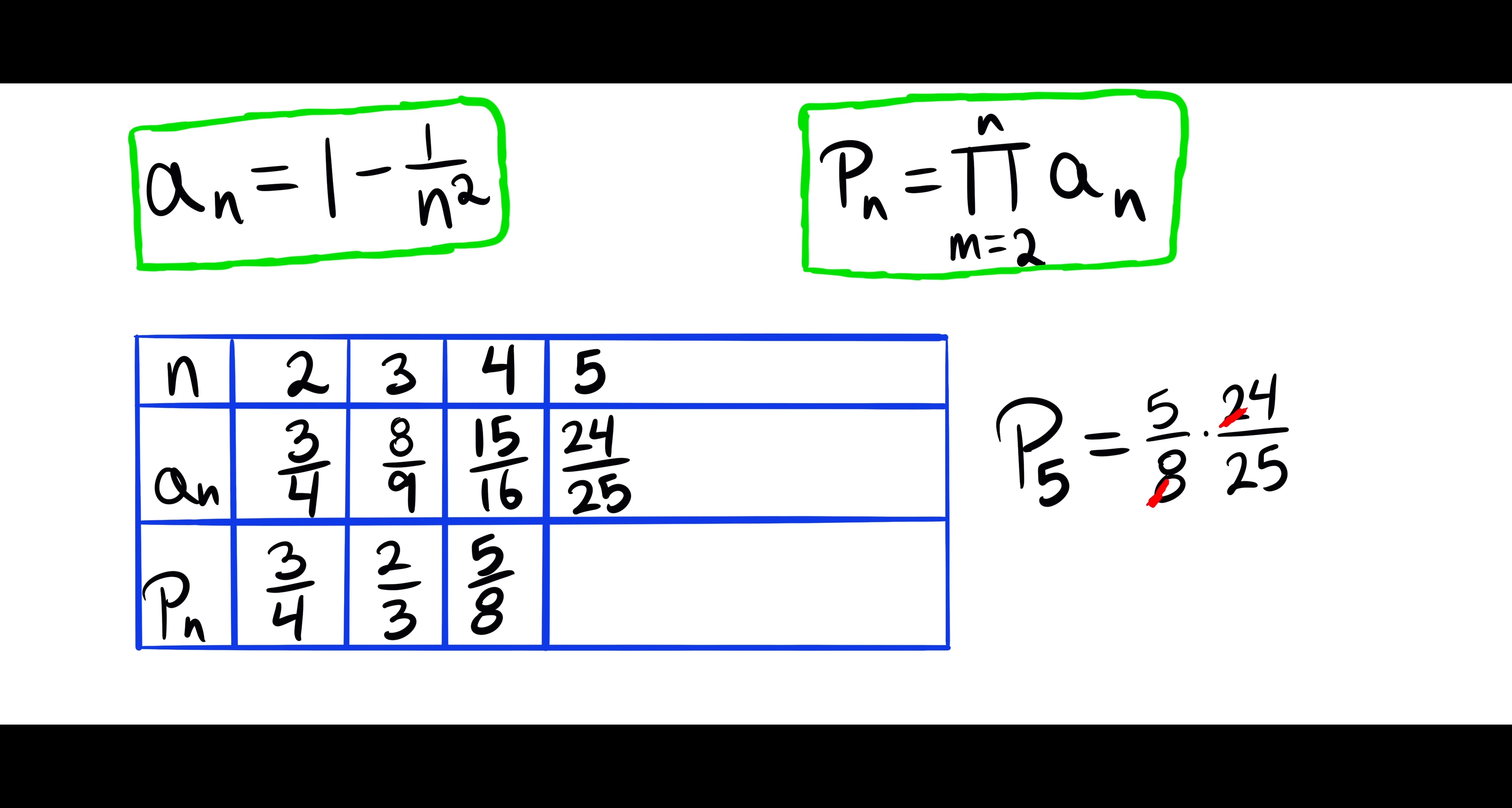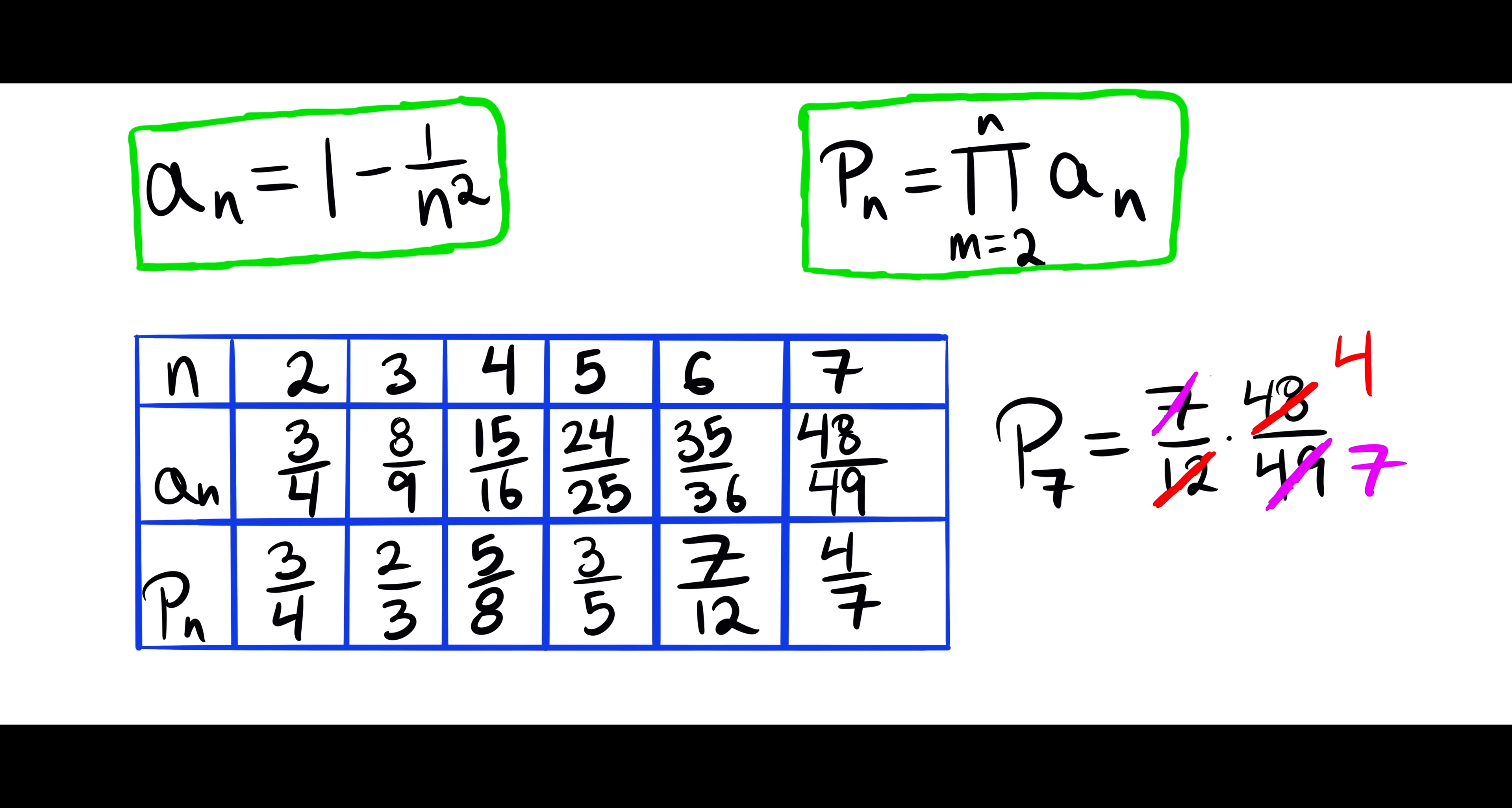When n is 5, we have 24 over 25 and 3 over 5. When n is 6, we have 35 over 36 and 7 over 12. And then finally, when n is 7, we have 48 over 49 and 4 over 7 for that partial product.